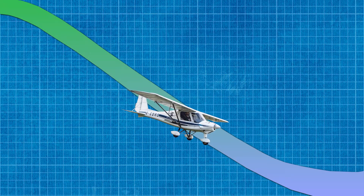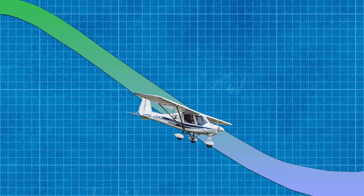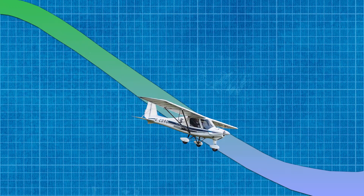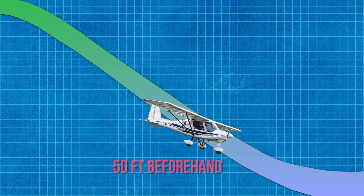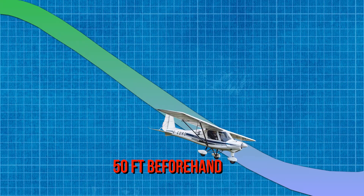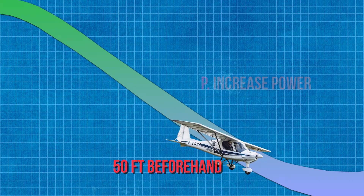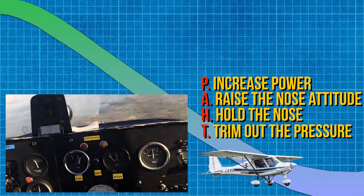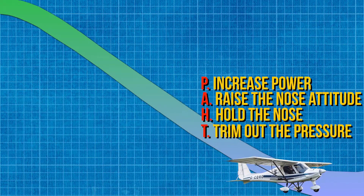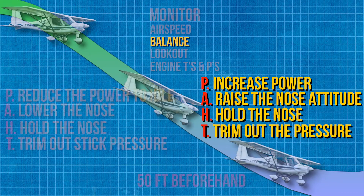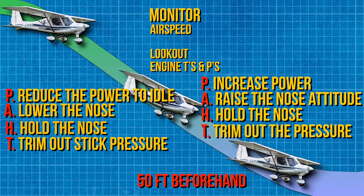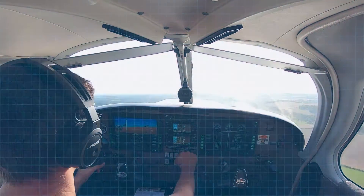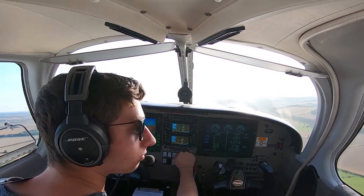Now we are still descending and we are about to reach our predetermined altitude. We will start following the acronym PAT — this is usually done 50 feet beforehand. We are going to increase the power, adjust the nose attitude, and hold and trim for level flight. The very last thing we do is look out. We are on a new level, and we want to look out for all the traffic around us.